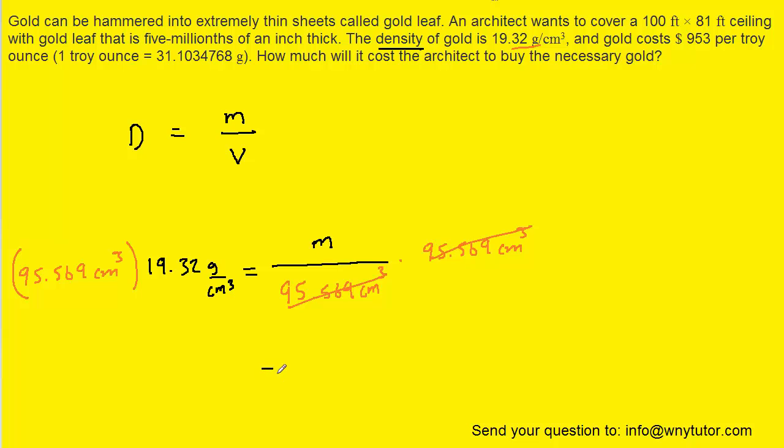On the right side, those values will cancel, and that's going to leave us with just the mass. Over here, we're going to multiply these two numbers together. Notice that the centimeters cubed in the numerator will cancel with the centimeters cubed in the denominator. That's going to leave us with just grams. So let's multiply those two numbers. We end up with 1,846.4, roughly, grams is our mass.